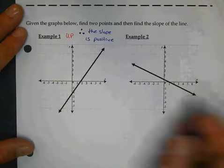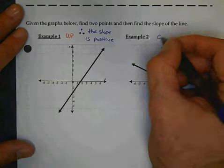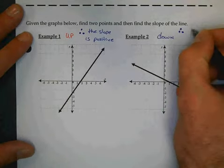Example 2. From your perspective, which way does this line go? It goes down. Therefore, the slope is negative.